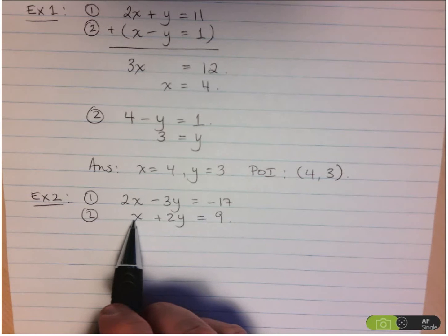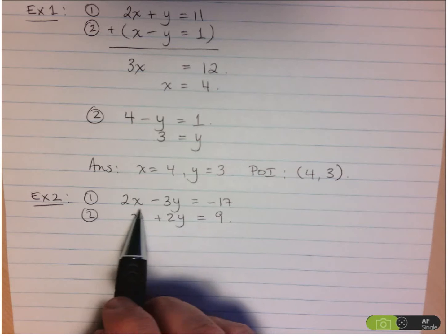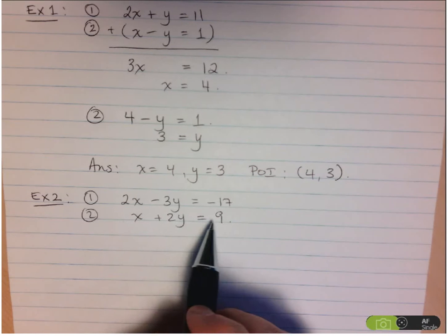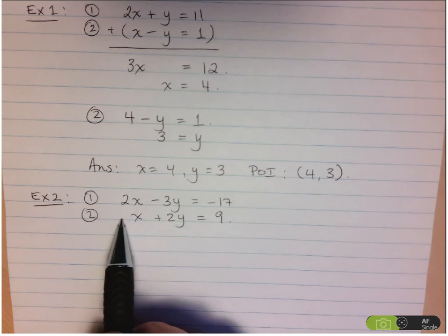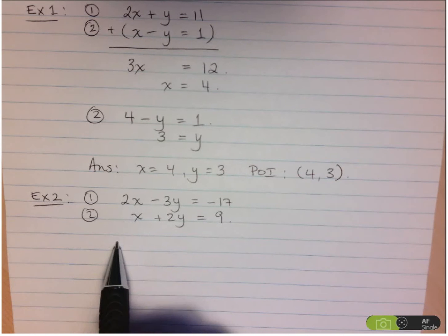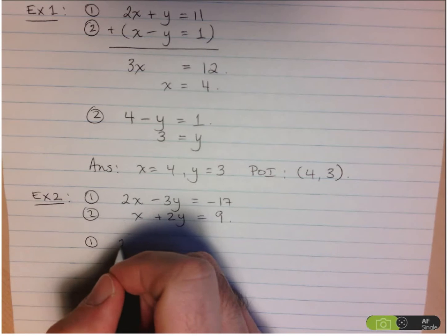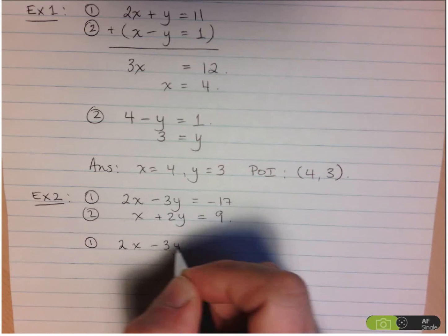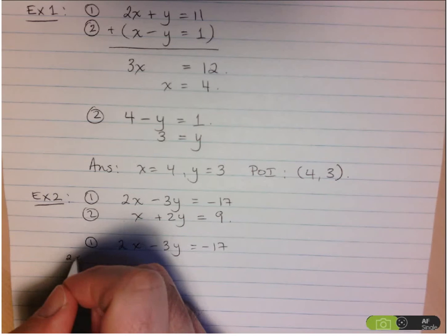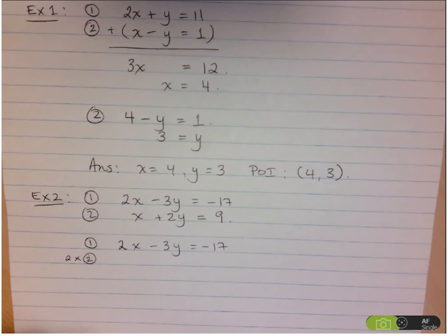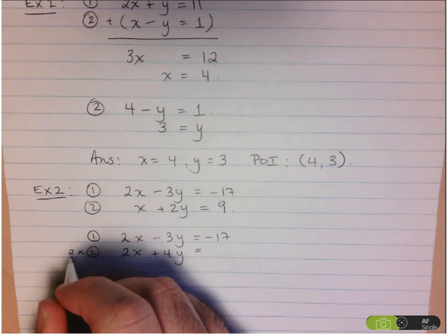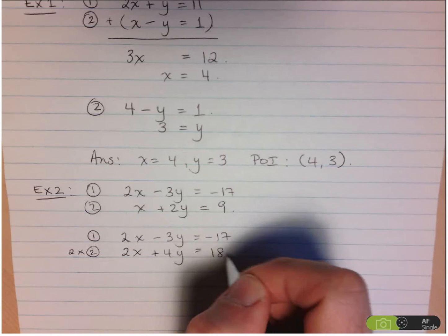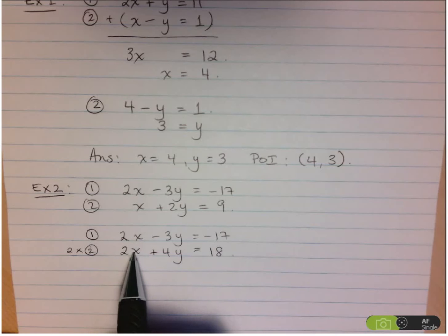I need to do a little manipulation first. Remember that I can multiply a number to one side of an equation as long as I do the same to the other side. So I'm going to multiply equation 2 by 2, which will give me a 2x — the same coefficient as in equation 1. I'll keep equation 1 as is: 2x minus 3y equals negative 17. Multiplying equation 2 by 2 gives: 2x plus 4y equals 18. Now I have a 2x in both equations, so instead of adding, I'm going to subtract them.